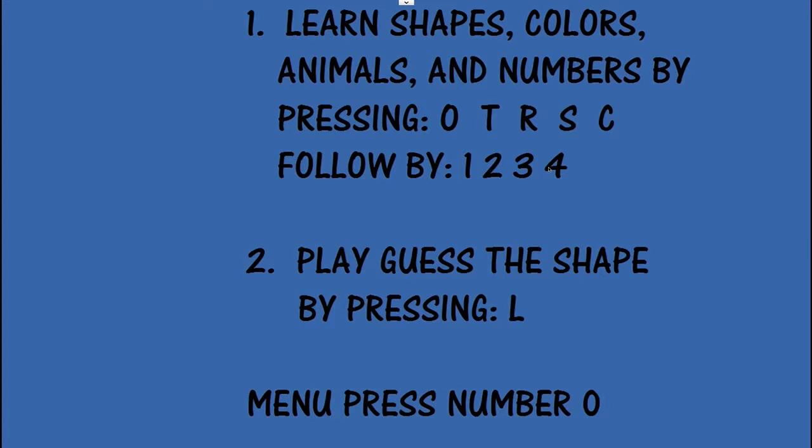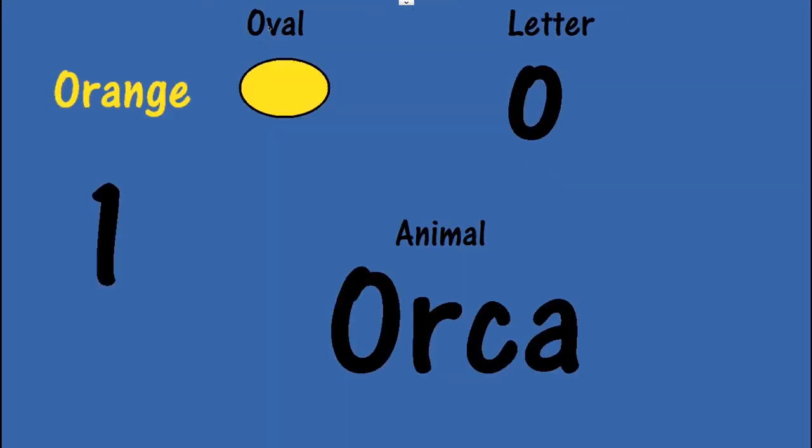So let's press the O. You have the letter O, a shape, an oval, the color orange, an animal, an orca, and the number 1.